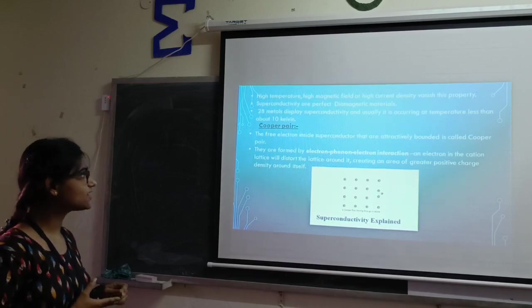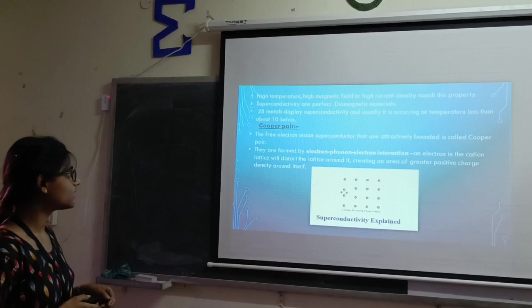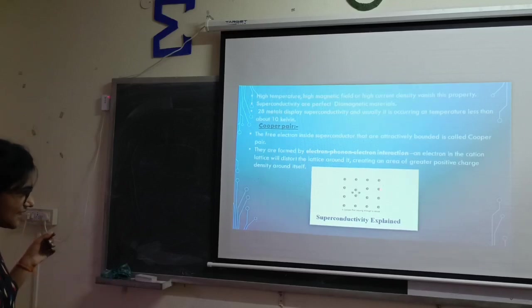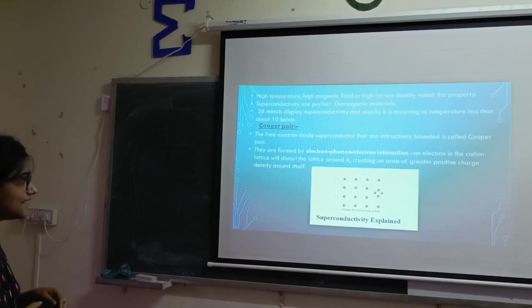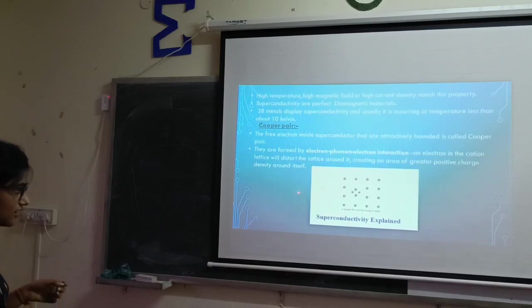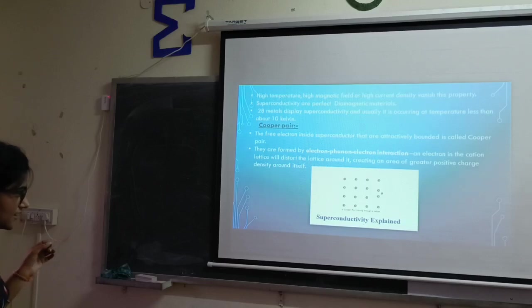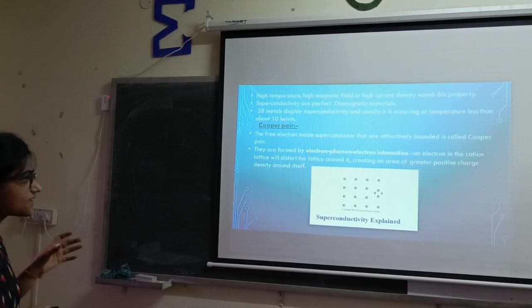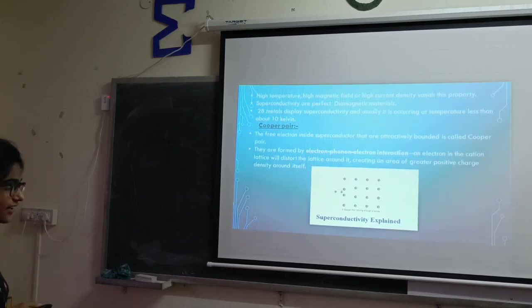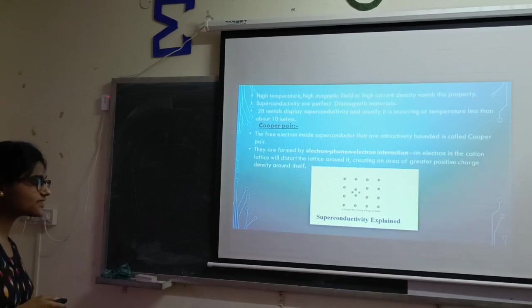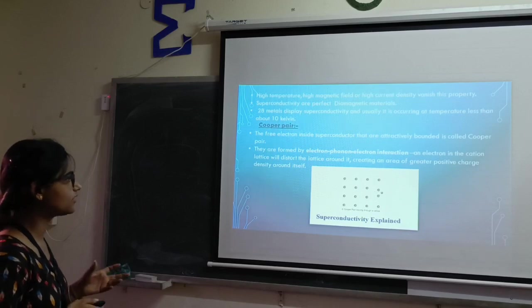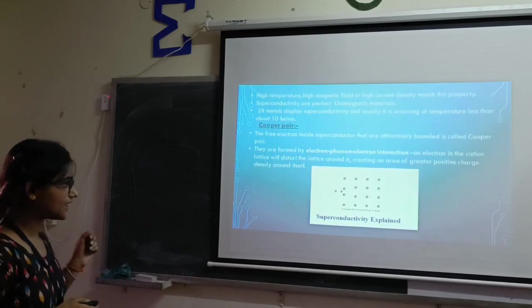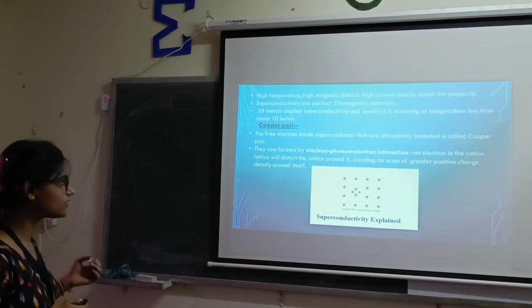The bound electrons inside a superconductor are called Cooper pairs. Here the superconductor is moving inside a lattice. They are formed by electron-phonon-electron interaction. An electron in the cation lattice will disturb the lattice around it. The electron is forming, and the lattice are squeezed when the electron is there. As the lattice has cations and electrons are negatively charged, they both attract, creating an area of higher positive charge density around itself.